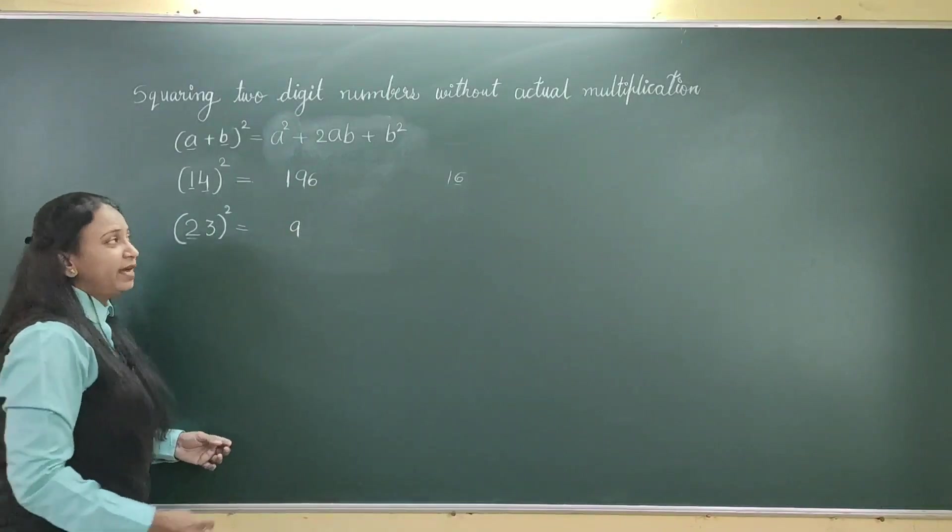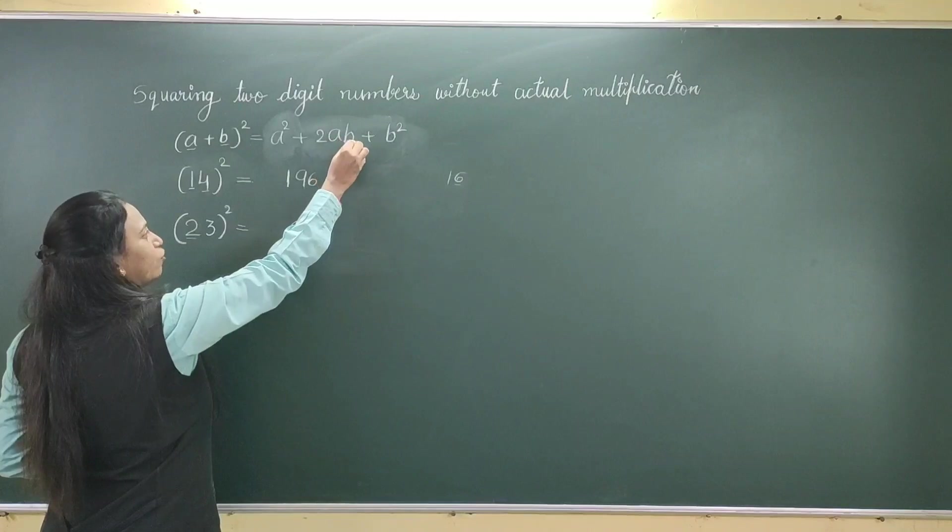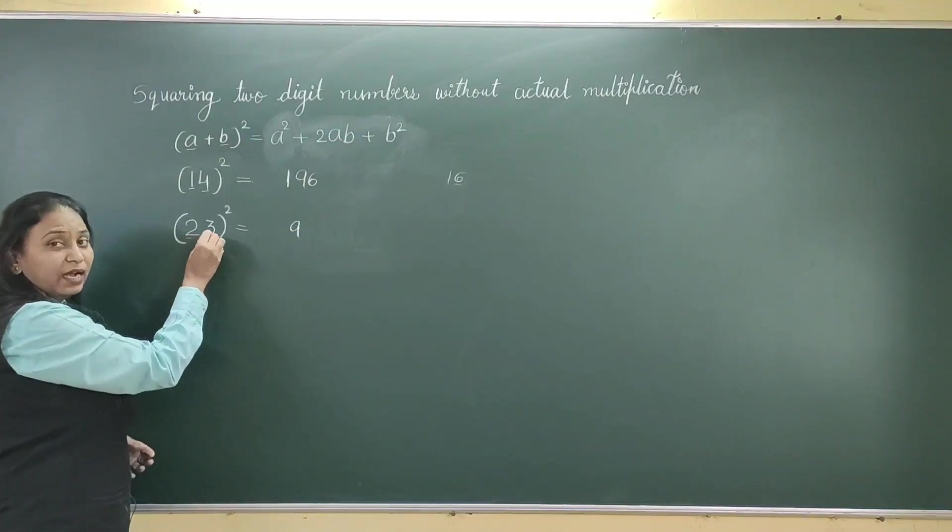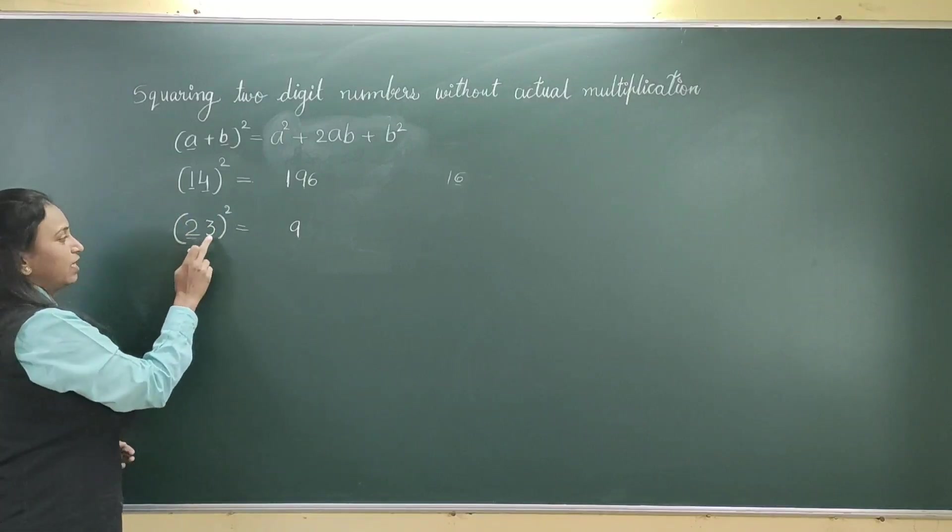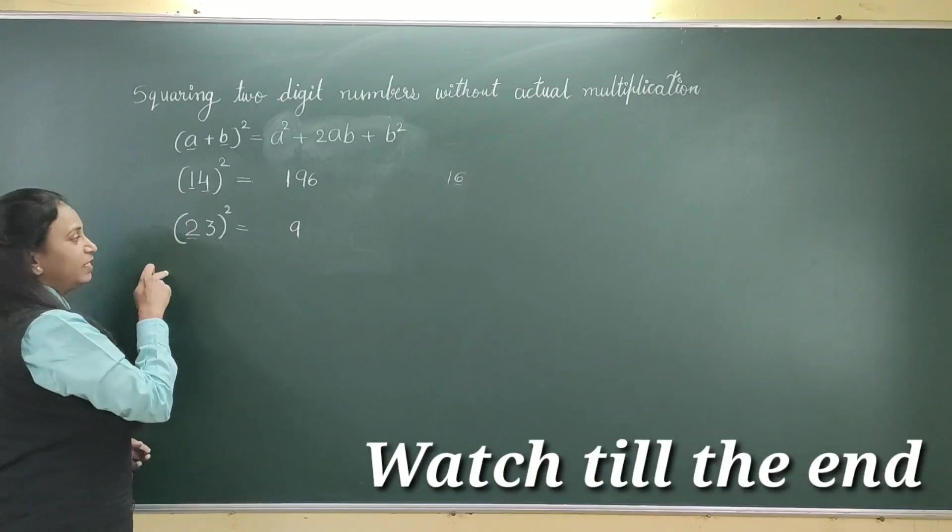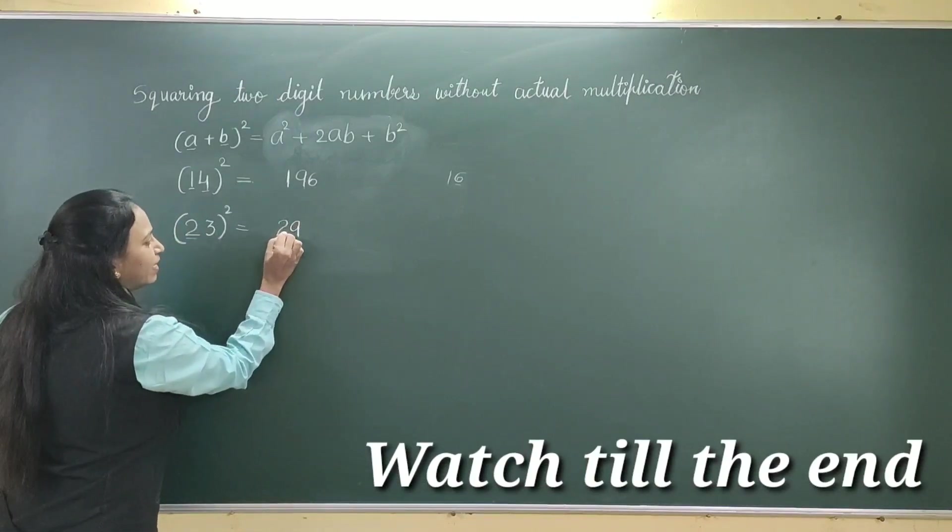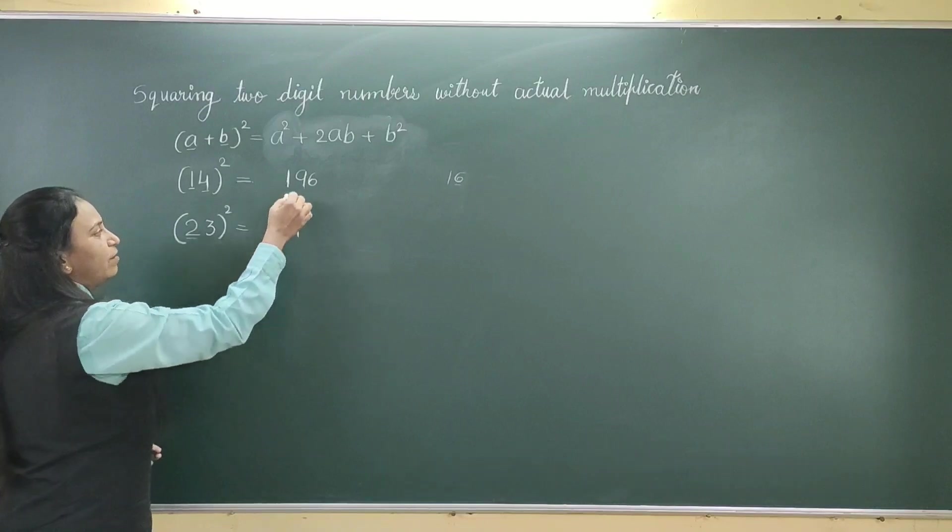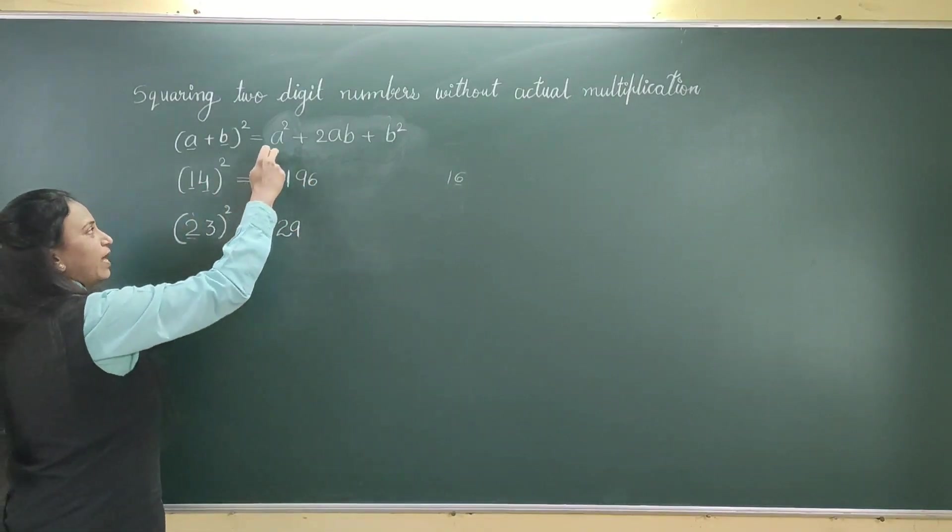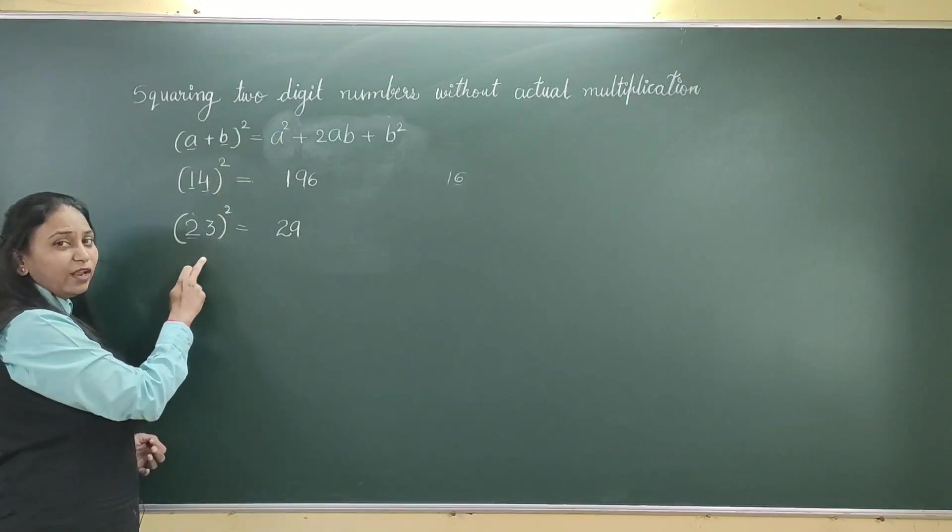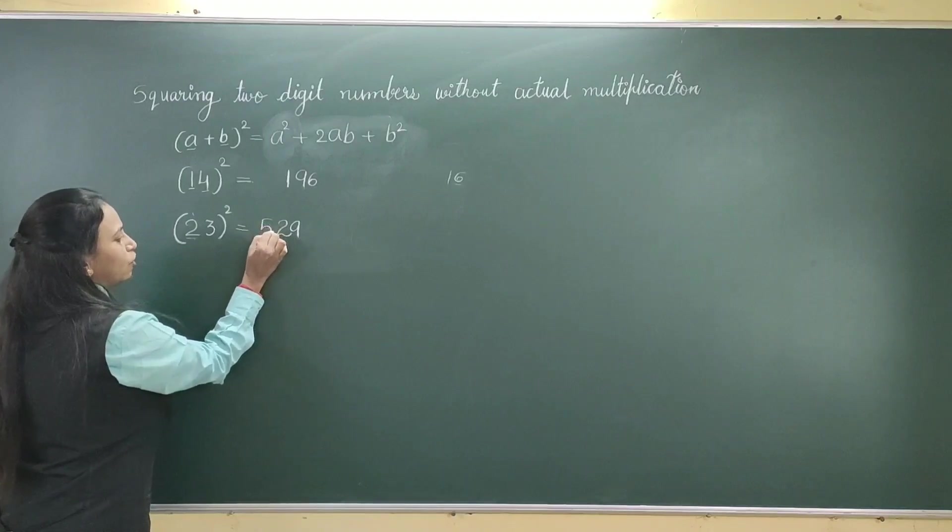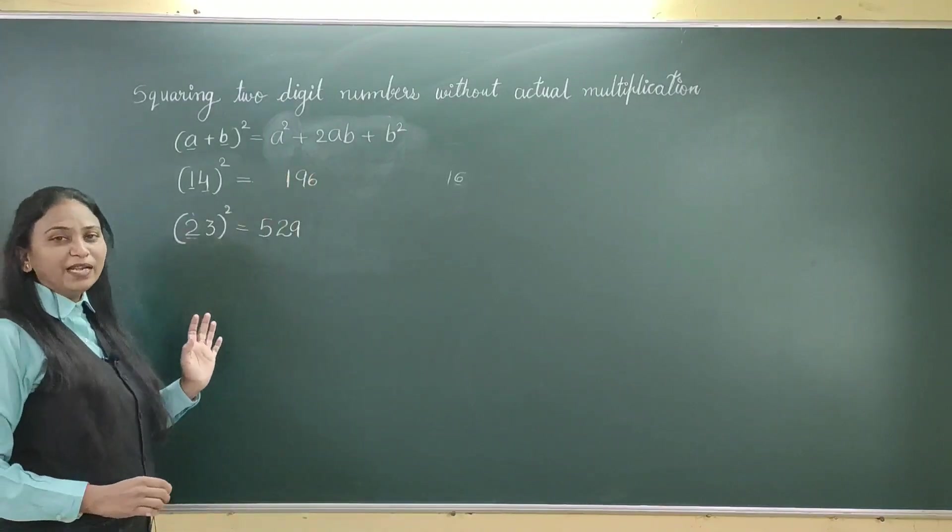Square of 3 is 9. Then, the middle term 2ab. That is multiplication of these 2 terms, again multiply the product with 2. That is 2 × 3 = 6, × 2 = 12. So, unit digit of 12 is 2 and 1 will be carried to the next digit, which is the square of the first term. Square of 2 is 4, 4 + 1 = 5. So, you got 529 without any multiplication.